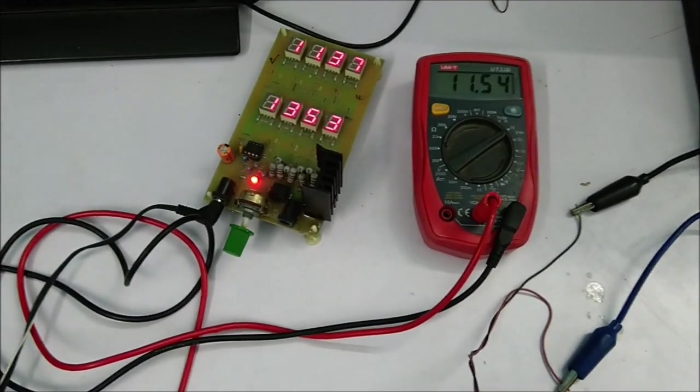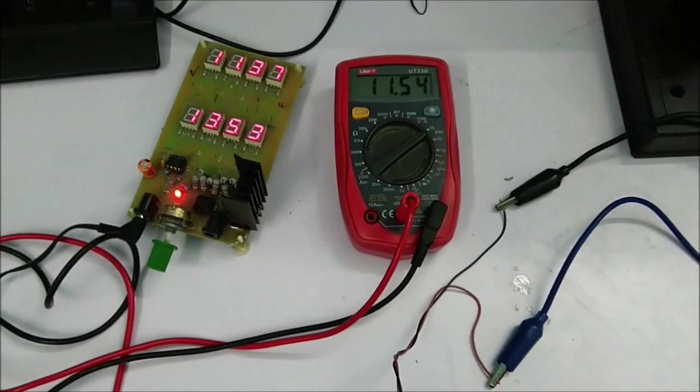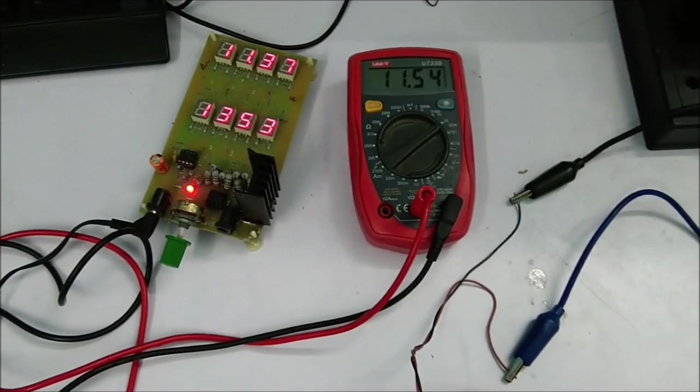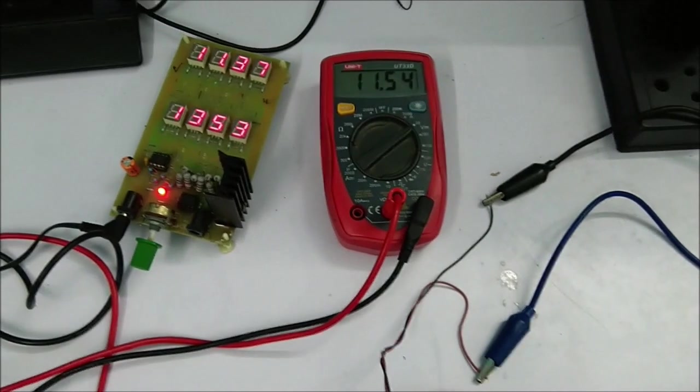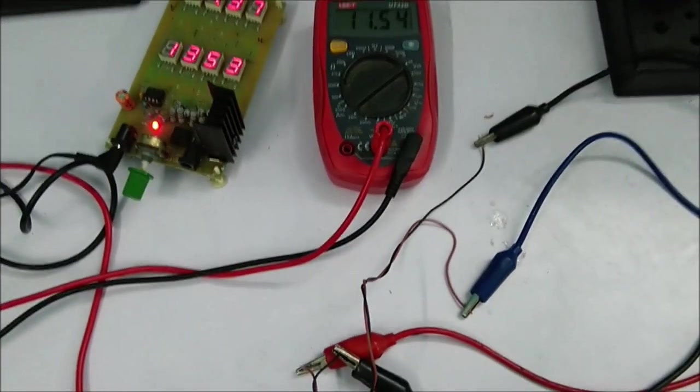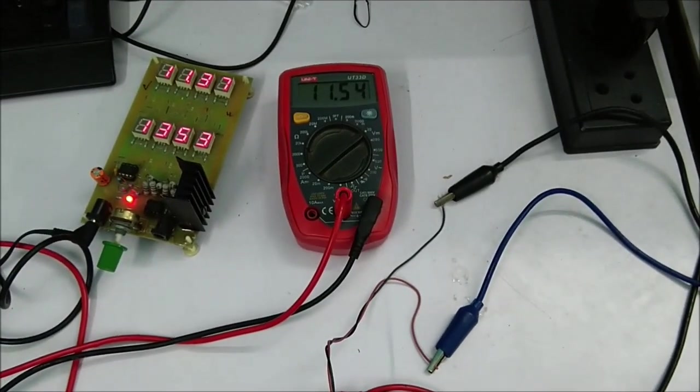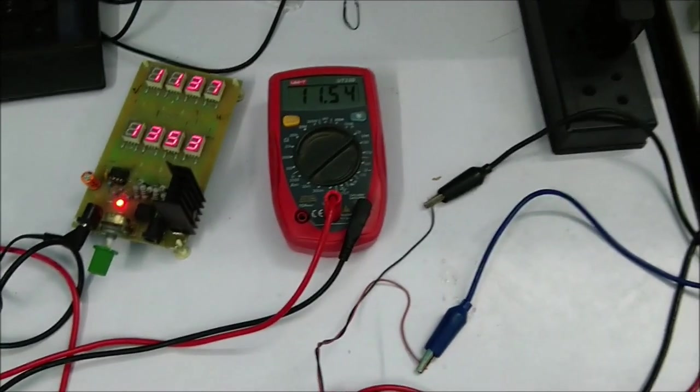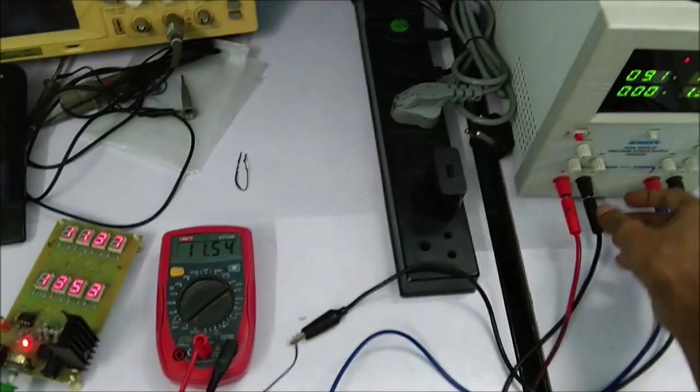In scenarios where the load needs to be powered every time but there's a chance of power failure in the main supply line and you need an auxiliary power supply, this will be a helpful feature for the circuit. This is how it works.